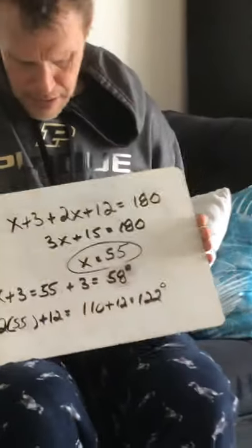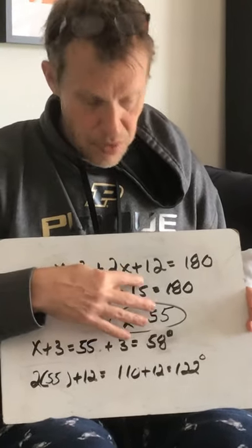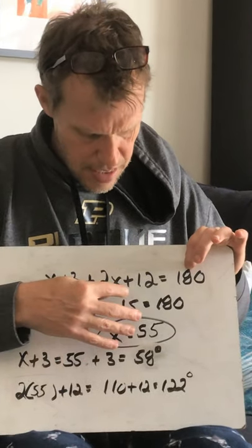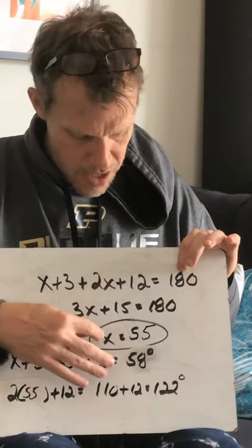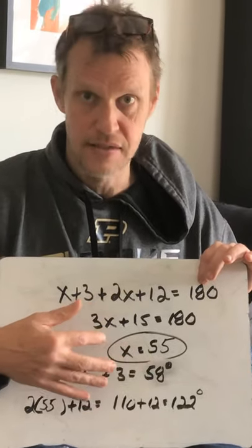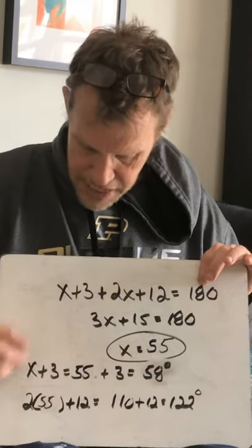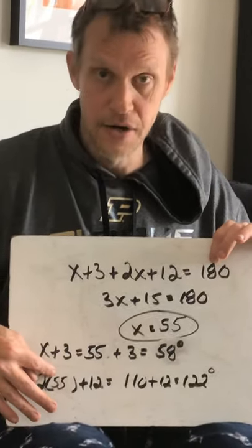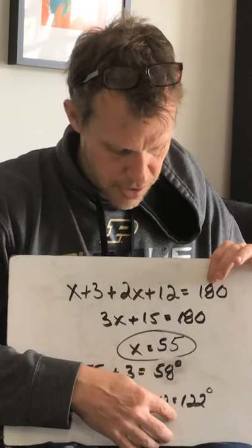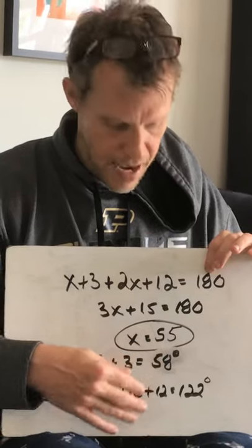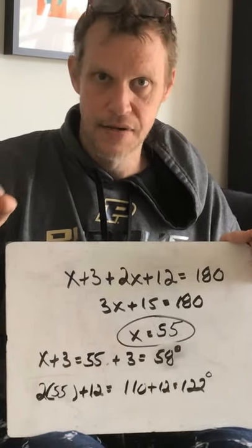So x plus 3 (angle 1) plus 2x plus 12 (angle 2) — add those together and make it equal to 180. Combine like terms and you get 3x plus 15 equals 180. Solve for x and you get x equals 55. If Khan asks for x, stop there. If Khan asks for one of the angles, plug x in. First angle: x plus 3 gives you 55 plus 3 = 58 degrees. Second angle: 2 times 55 is 110, plus 12 = 122 degrees. Notice they add up to 180 — 122 plus 58 is 180, and that should always happen.